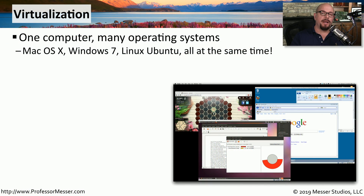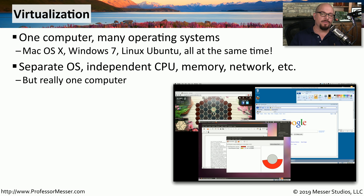With virtualization, you might have one physical computer, but you're running many different operating systems at the same time on that same computer. Each one of those virtualized operating systems has its own set of resources. So each VM is going to have its own CPU, its own memory, its own storage, and all of those systems work independently of each other.